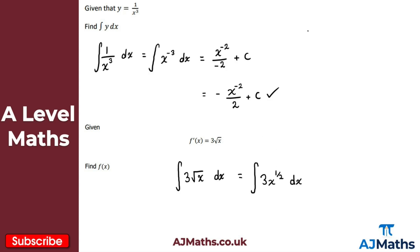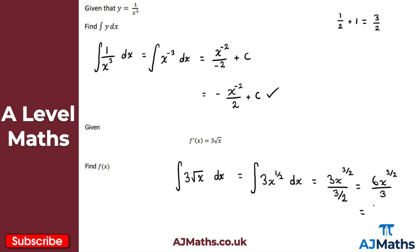We add 1 to the power: a half plus 1, which is a half plus 2 over 2, giving 3 over 2. So we get 3x to the power of 3 over 2, and divide by 3 over 2. Dividing by 3 over 2 is the same as multiplying by 2 thirds, so we get 6x to the power of 3 over 2 over 3. Simplifying, 6 over 3 is 2, giving 2x to the power of 3 over 2, plus c. It's really important not to forget the constant of integration — you lose a mark if you do. So that's f of x.